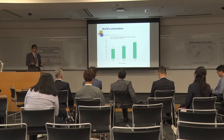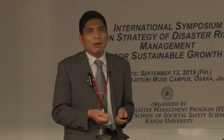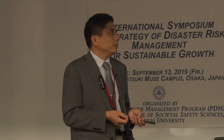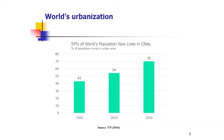On the other hand, urbanization is going on — it means more and more people are concentrated in urban areas. Here is a picture from the United Nations report: in 1990, the percent of population living in urban areas was 43%, but by the year 2050 the percent of population living in urban areas will increase to 70%.